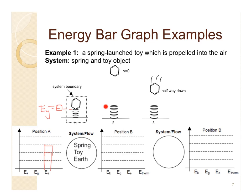Next we look at the second picture. In picture B the spring is no longer compressed because the toy is not sitting on it and the coils have moved apart. The toy is up in the air with velocity equals zero, so there's no kinetic energy. The ball has moved above the gravitational energy equals zero point, so there will be gravitational energy, but there's no elastic energy. That means all the energy initially stored in the spring has now been transferred to the gravitational energy bank account.